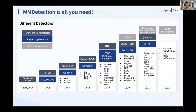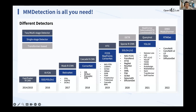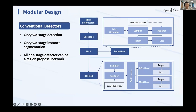MM Detection supports many classic and recent object detectors. We support Faster RCNN from 2014 and the most recent methods like DINO and Mask2Former. We also support open-vocabulary detectors like DETIC and DiffusionDet, which introduces diffusion processes for object detection. This includes two-stage, multi-stage, single-stage detectors, and transformer-based models. A recent one-stage detector from the MM Detection team, RTMDet, targets real-time usage for industrial requirements.